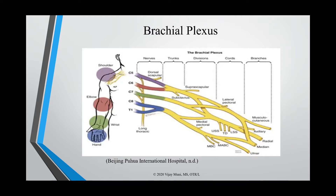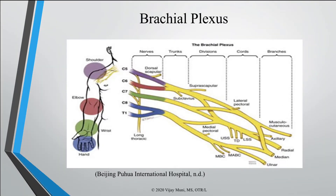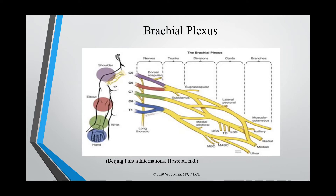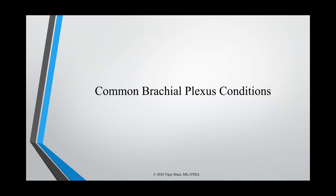This is super important because let's talk about the different nerves that arise from the cords. The median nerve arises from the lateral and medial cords. The radial nerve innervates from the posterior cord. And the ulnar nerve arises from the medial cord. For the purposes of this lecture, we're only going to discuss the radial, median, and ulnar nerves.